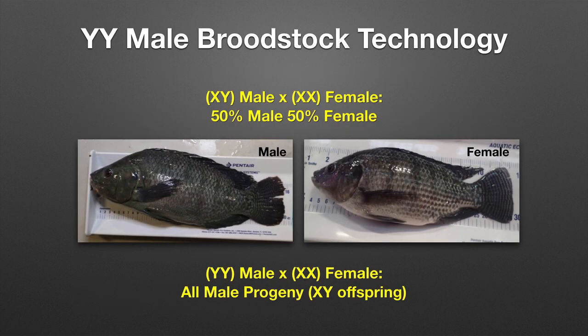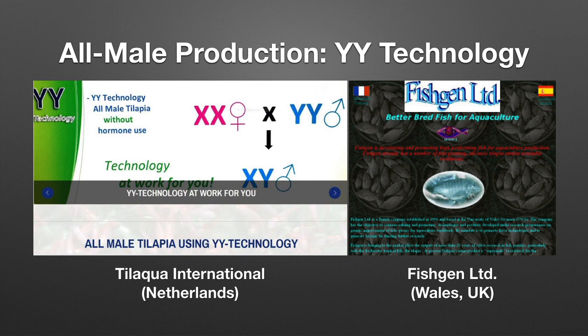The methyl testosterone product costs $700 per year, and last year there were about 8–15 participating facilities. The fourth method of producing all-male offspring is by use of YY male broodstock technology. Males and females in Nile tilapia are normally defined by X and Y chromosomes — males have XY and females have XX. A normal cross results in 50 percent male and 50 percent female. However, if a broodstock male has two Y chromosomes and is crossed with a normal XX female, we should get all-male progeny with an XY chromosome.